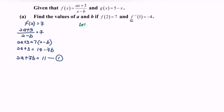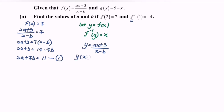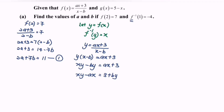Let y = f(x), then f inverse of y equals x. So y = (ax + 3) / (x - b). Cross multiply: y(x - b) = ax + 3, so xy - by = ax + 3. Rearrange: xy - ax = 3 + by. Factor out x: x(y - a) = 3 + by.